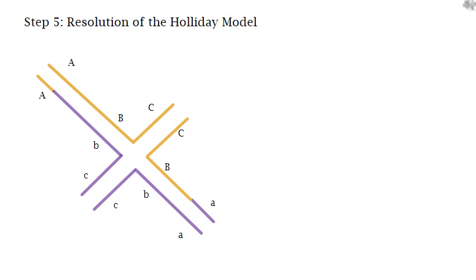The Holliday model is enzymatically cleaved. The cleaved ends are then repaired by enzymes to create two new heterologous double helixes. This can happen one of two ways.